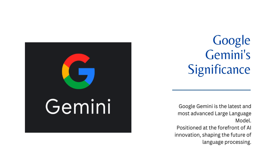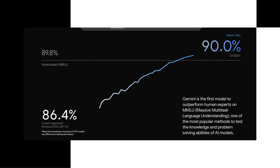Google Gemini has very rare significance. Google Gemini is the latest and most advanced large language model to exist in today's world. It was released in December 2023 and is positioned at the forefront of AI innovation. We hope it will help shape the future of language processing. Gemini is the first model to outperform human experts on massive multitask language understanding, one of the most popular methods to test the knowledge and problem-solving abilities of AI models.